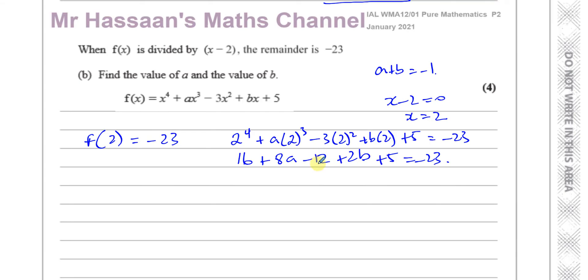So I've got 8a + 2b + 9 = -23. Minus 9, which is -32. -23 minus another 9 is -32. I can see here that I can divide everything by 2 to make it simpler.